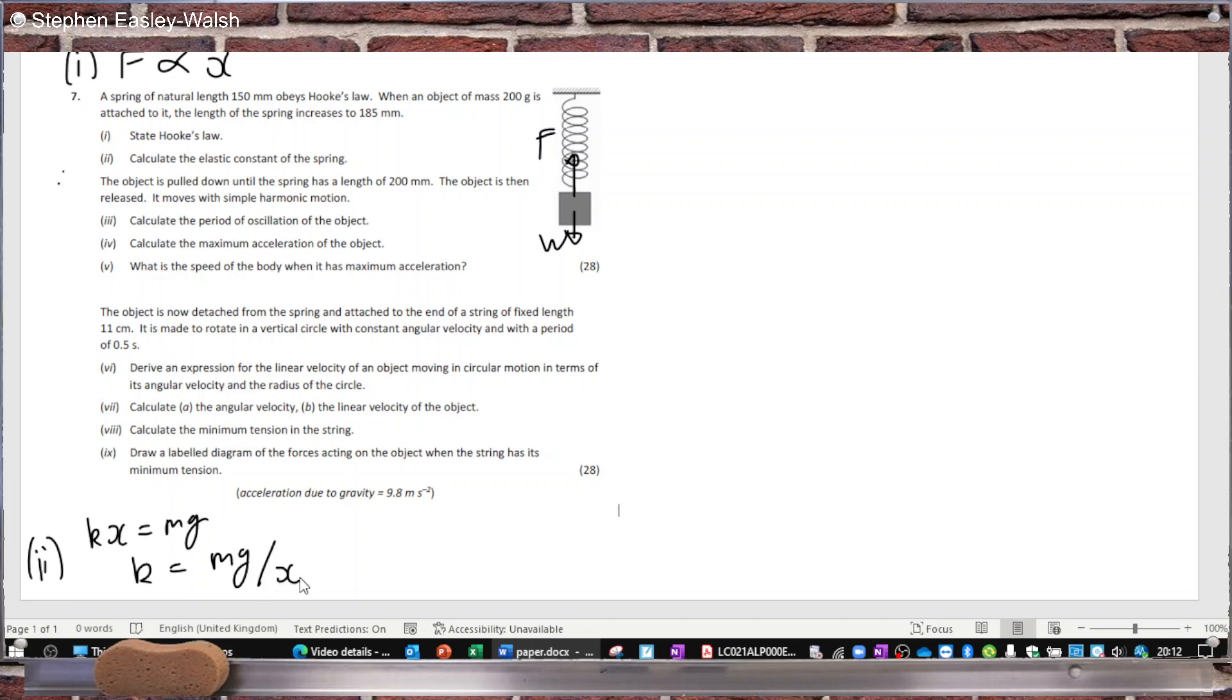Taking out my calculator. The M is 0.200, G is 9.8, and the extension from 150 to 185 is 35 millimeters, so that's 0.035. That equals 56.0 newtons per meter.